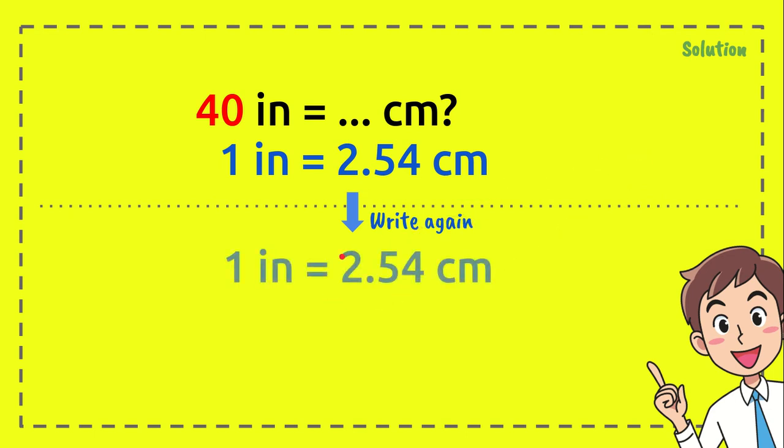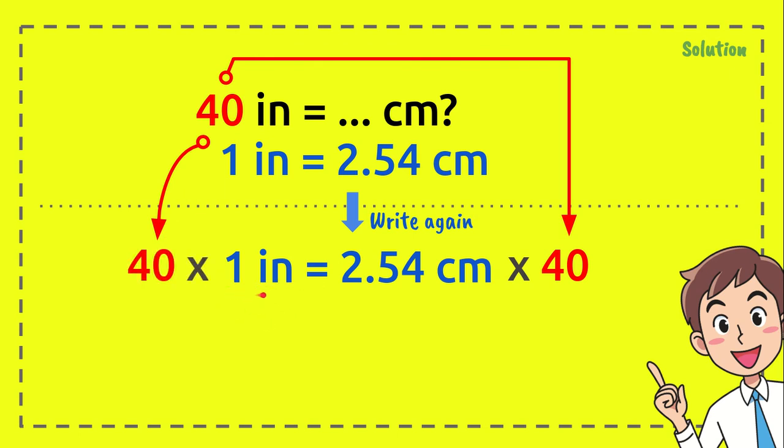And after you write it here, you need to put 40 in here and here as well. So we will put 40 in the right side of the equal sign and multiply it with this number. And another one in the left side of the equal sign and multiply it with one inch.